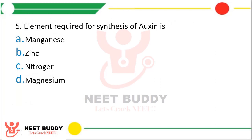Question 5: Element required for synthesis of oxygen is? Manganese, nitrogen, zinc, or magnesium. The correct answer is Option B, that is zinc is required for synthesis of oxygen.